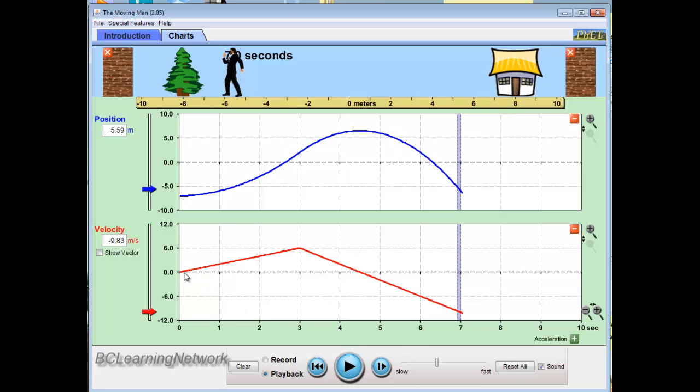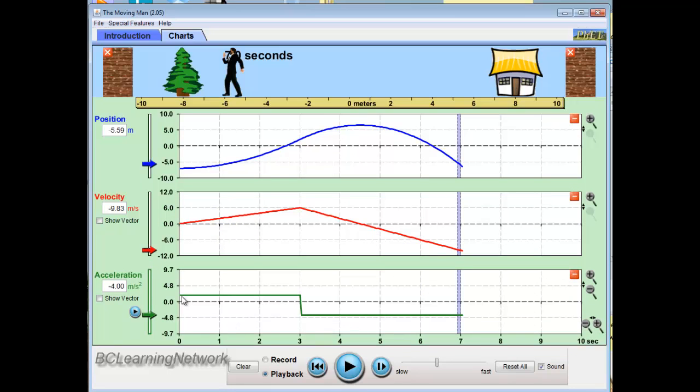What does my acceleration time graph look like? Well, the slope of my velocity time graph is acceleration. Describe the slope of your velocity time graph and you've described the acceleration. So if we do this in words, a positive constant slope and a negative constant slope. Positive constant acceleration and a negative constant acceleration. Let's have a look. Positive constant acceleration immediately switching to negative constant acceleration.